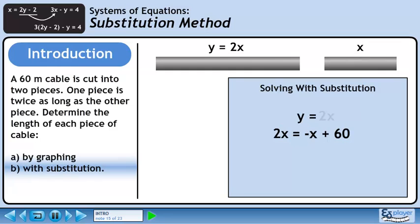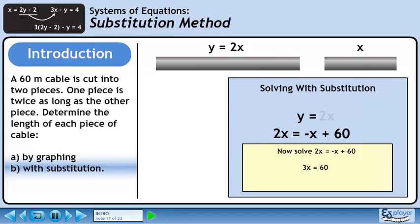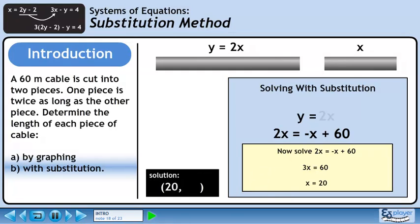We will now perform a substitution by plugging in 2X for Y in the second equation. Now we'll solve the equation 2X equals minus X plus 60 for X. Bring minus X to the left side to get 3X equals 60. Divide both sides by 3 to isolate X, which is 20.